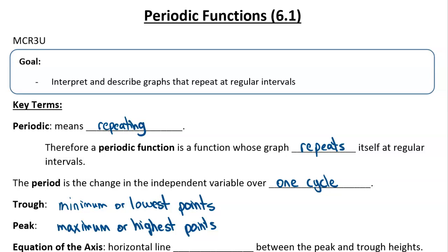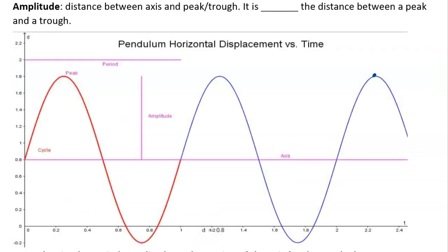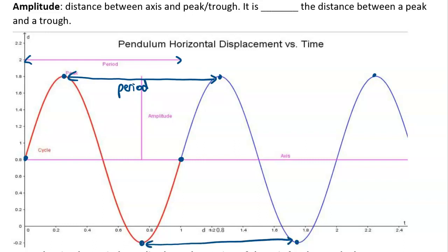The equation of the axis is a horizontal line midway between the peak and the trough heights. On the graph, the period is labeled as the x distance from where one cycle starts to where it ends. That doesn't have to be measured from the axis — it could be measured from a maximum to a maximum, or from a minimum to a minimum; those are all the same distance and all represent the period.